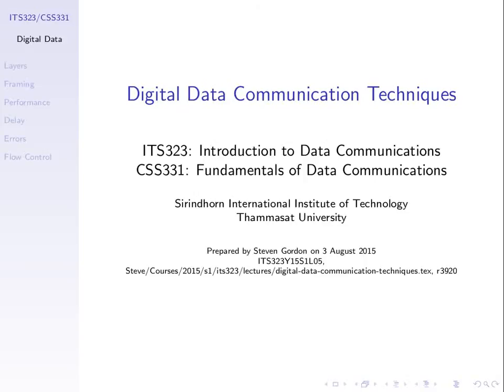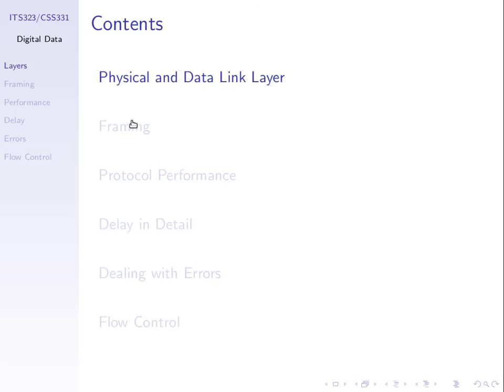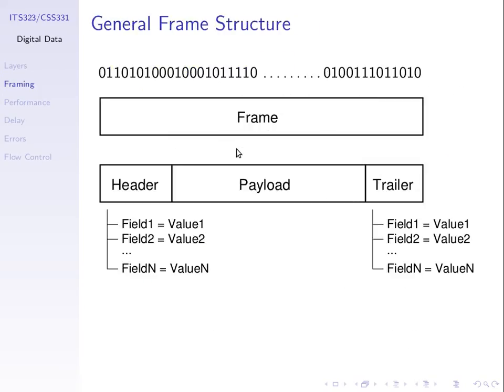We're focusing on how to get our digital data across a link, and we introduced the concept of framing in the previous lecture, where we said that we divide our data into chunks called frames. The frame contains some actual data which we refer to as payload, but it also contains some other information that helps the communications work correctly.